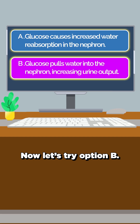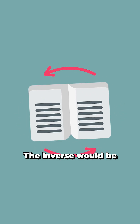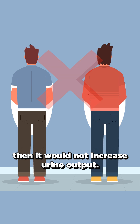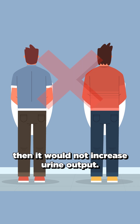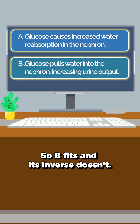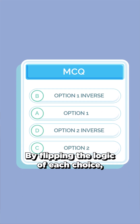Now let's try Option B. The inverse would be: if glucose does not pull water into the nephron, then it would not increase urine output. But we know glucose acts as an osmotic agent, drawing water in and leading to more urination. So B fits, and its inverse doesn't.